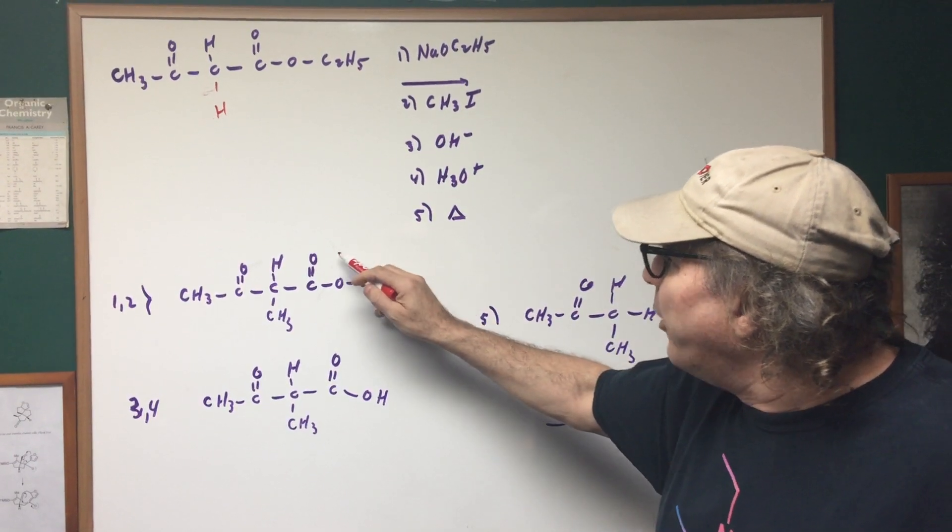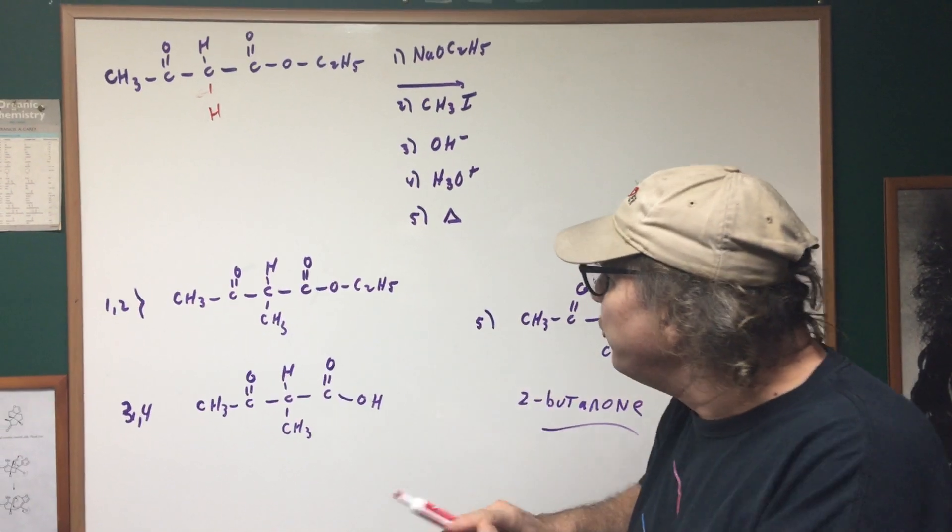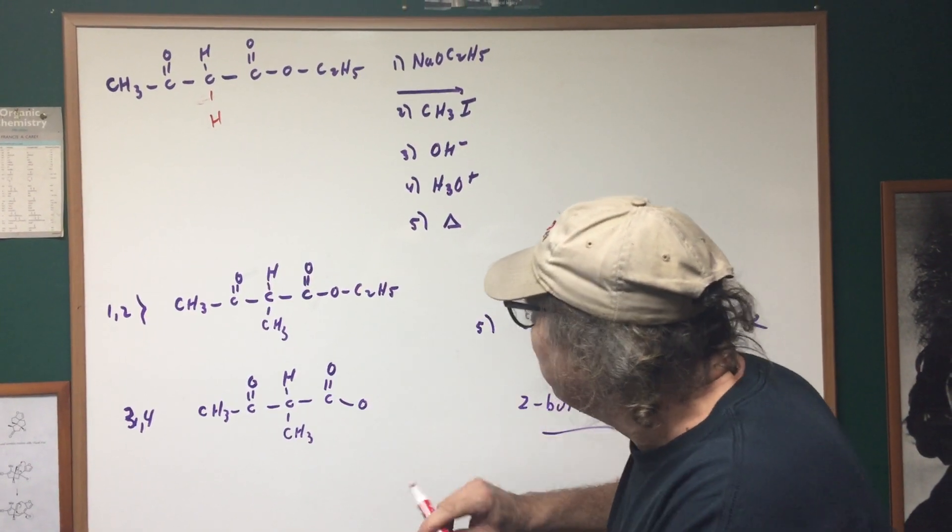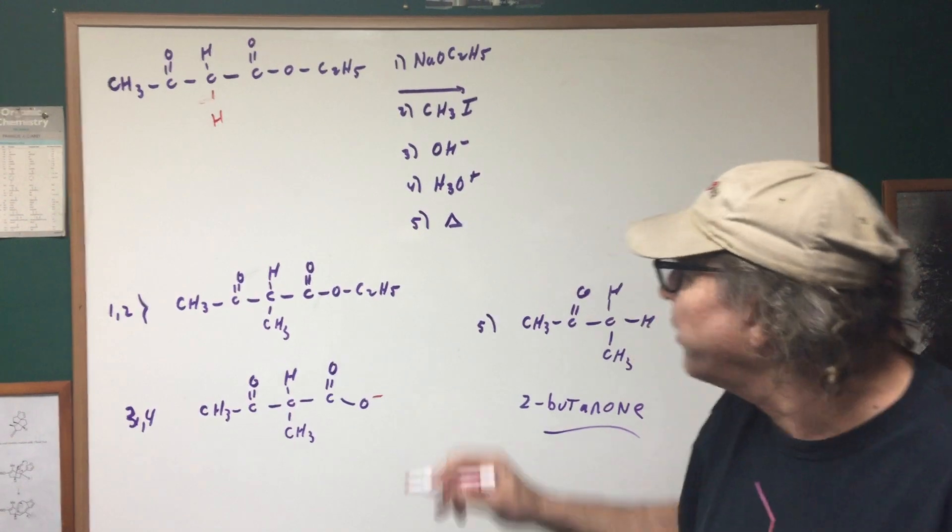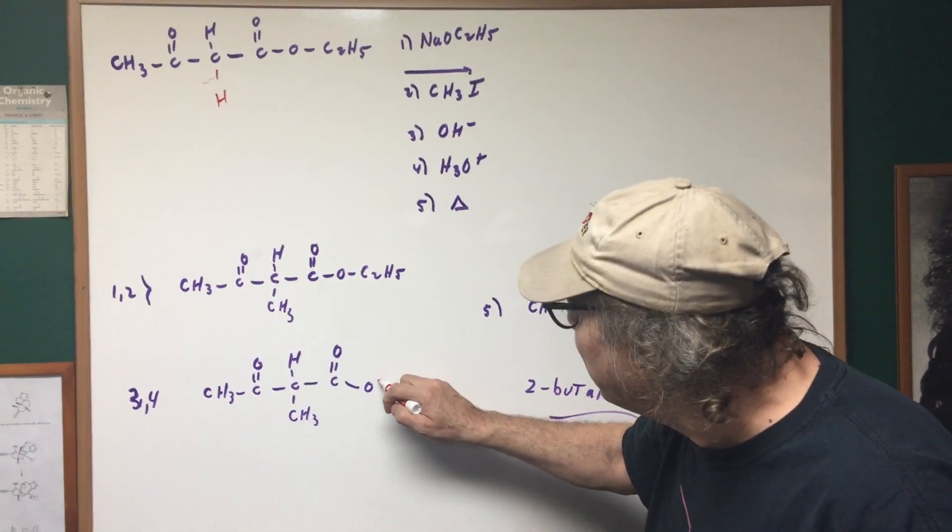Once we alkylated this by an SN2, you have base. What's base gonna do? It's gonna crack the ester down the middle. So when you crack the ester down the middle, you end up getting the carboxylate salt. And then step four would simply add an H, and now you got an acid.